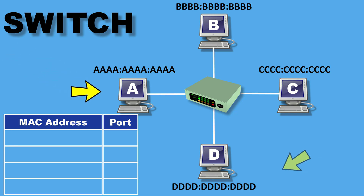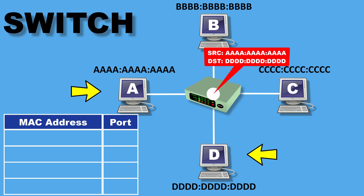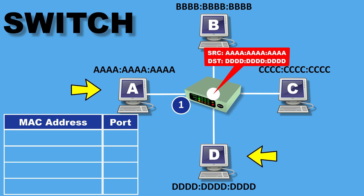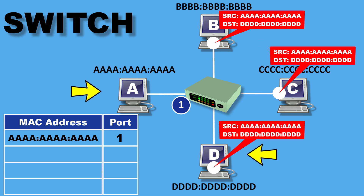Let's say PC A wants to send data to PC D only. PC A sends the data frame to the switch, and the switch receives it on port 1. The switch examines the source MAC address and checks its MAC address table, but the table is empty, so it adds PC A's MAC address with associated port 1. Then the switch checks the destination MAC address. Since it's not in the table, the switch behaves like a hub and broadcasts the data to every port except the ingress port. Only the destination PC D replies to PC A; all other PCs ignore the data.